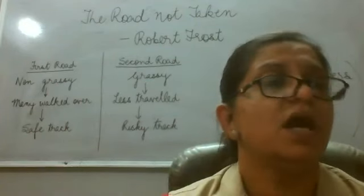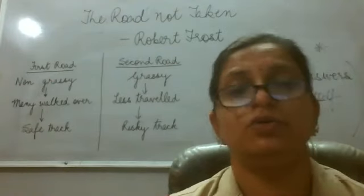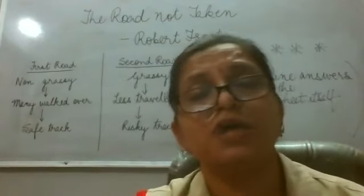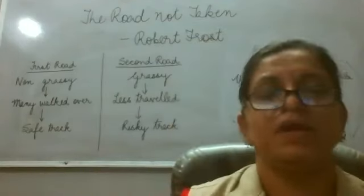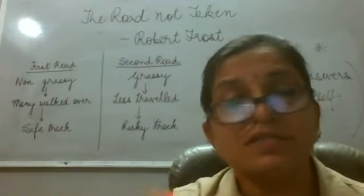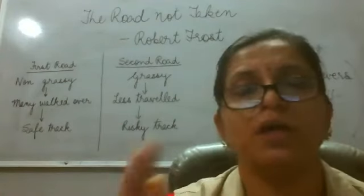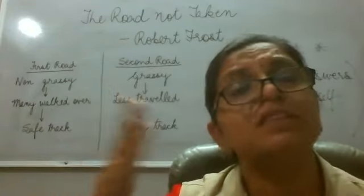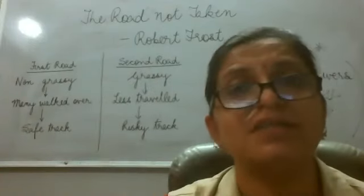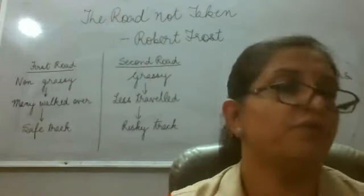Long I waited. And looked down one as far as I could — before taking a decision, many times we try to be farsighted. Farsighted means we think whether this decision of mine would be correct or not, whether I should take this one or that one. So we try to be farsighted about whether the decision we are taking would be an appropriate one.